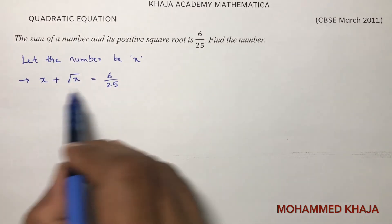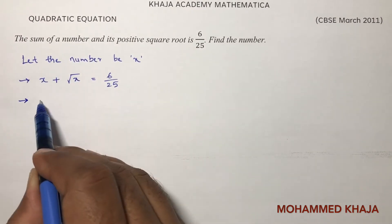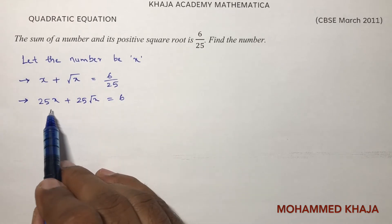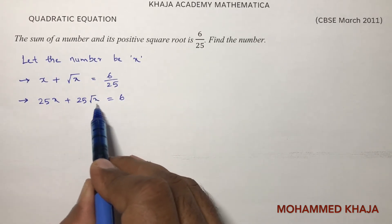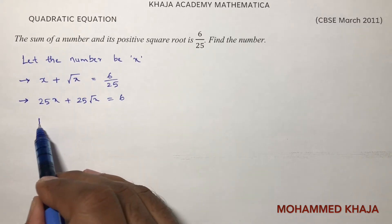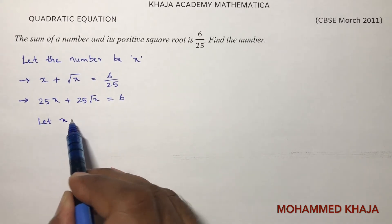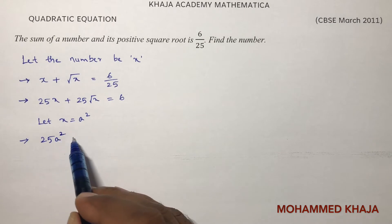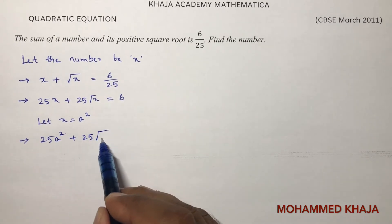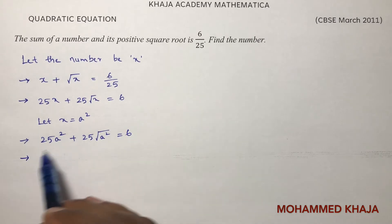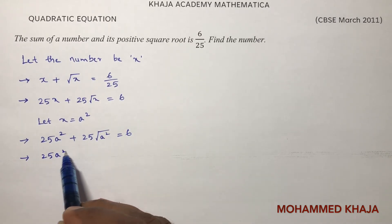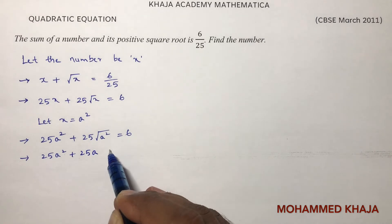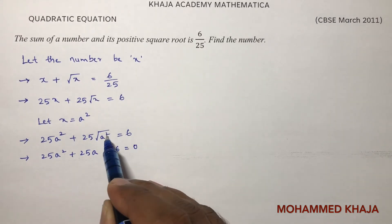Cross multiply first: 25x plus 25 root x equals 6. It is not in the form of a quadratic equation, but if you replace x as a square — let x equal a squared — this becomes 25a squared plus 25 root of a squared. Since root of a squared is plus or minus a, and the question clearly mentions positive square root, it will just be a.